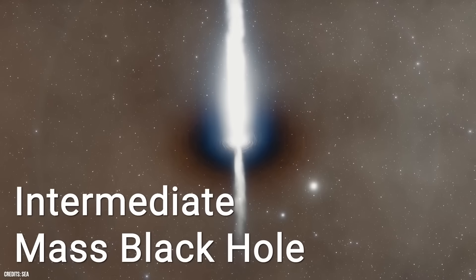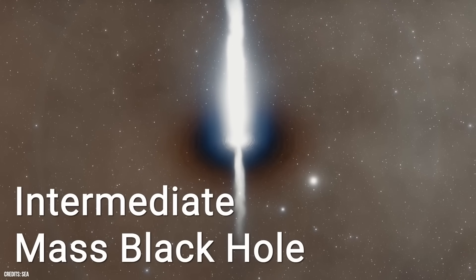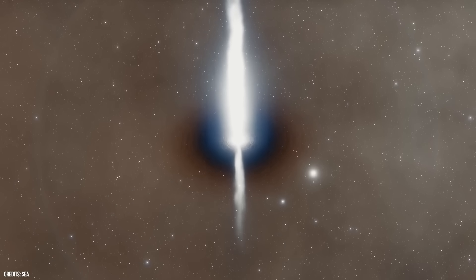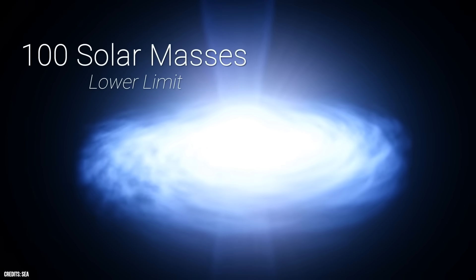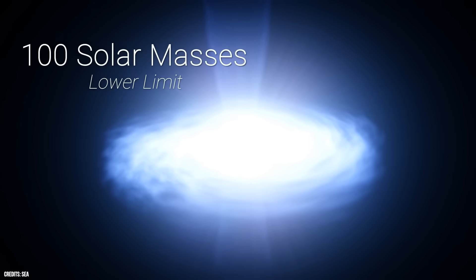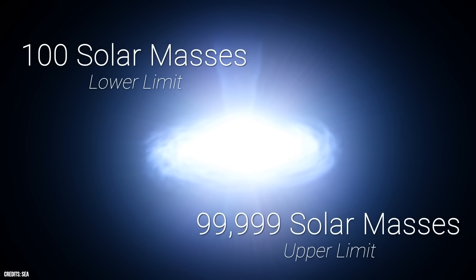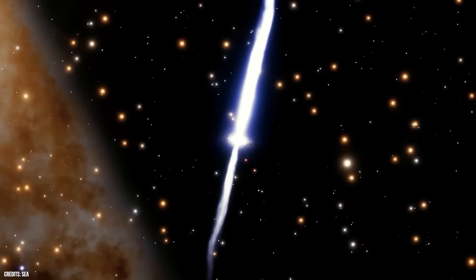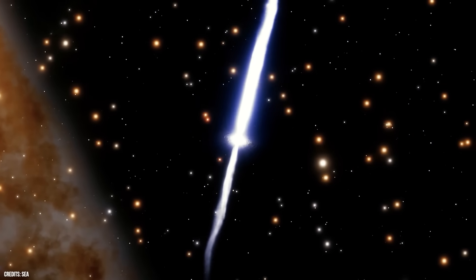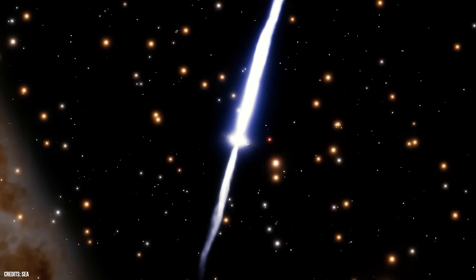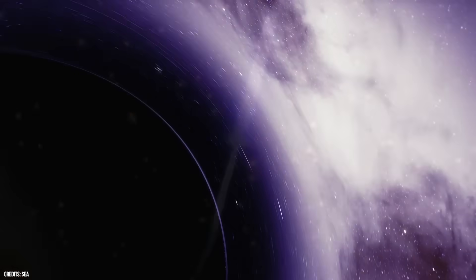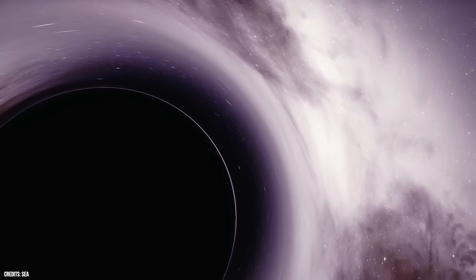Intermediate-mass black holes fall between the two categories mentioned earlier. They remain somewhat mysterious, with only a few discovered so far. Each is thought to have a mass ranging from 100 to 100,000 times that of the sun. It's believed that these black holes merge to eventually form the supermassive variety. Black holes not only account for the seemingly chaotic movements of certain stars and contribute to our understanding of galaxies, but they also introduce a new realm of physics for scientists.